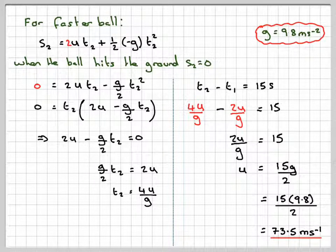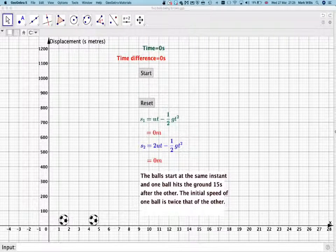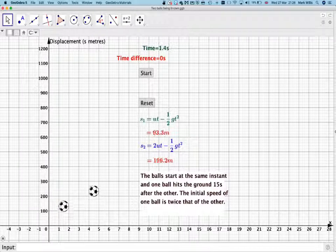So we'll just have one more look at the GeoGebra applet. So we'll go back to that. So we've got the GeoGebra applet. So we've got the slower ball and the faster ball. If we start the animation, and I will attach this GeoGebra applet in the notes of the video, we can see what happens.